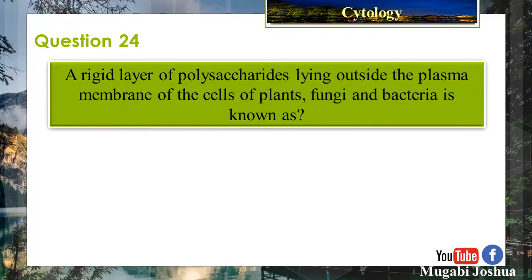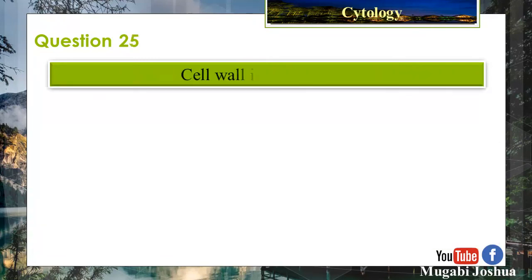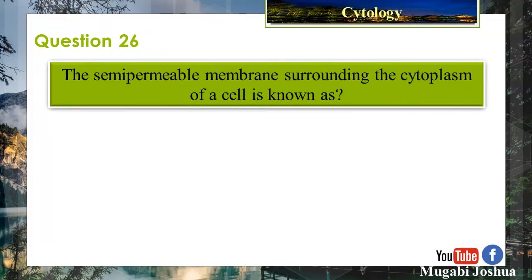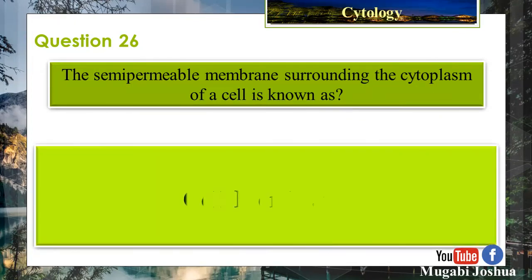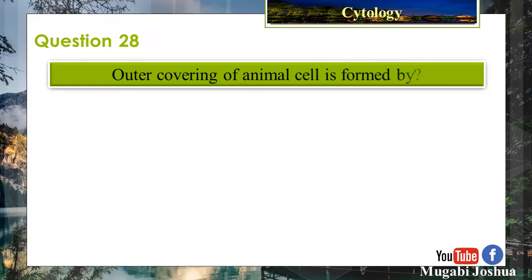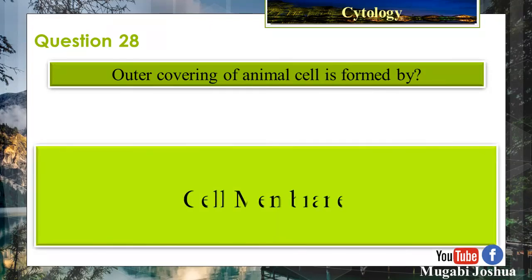Question 24: A rigid layer of polysaccharides lying outside the plasma membrane of cells of plants, fungi, and bacteria is known as the cell wall. Question 26: The semi-permeable membrane surrounding the cytoplasm of a cell is known as the cell membrane. Question 27: The cell membrane is also known as the plasma membrane. Question 28: The outer covering of an animal cell is formed by the cell membrane.